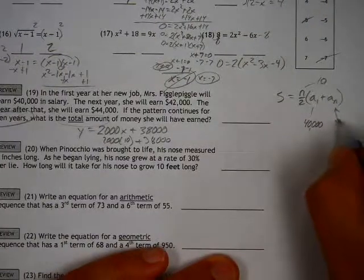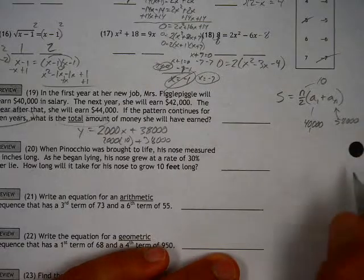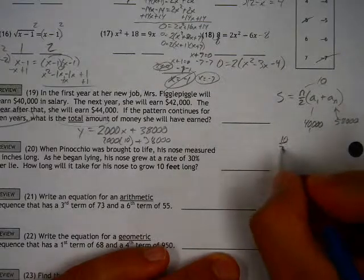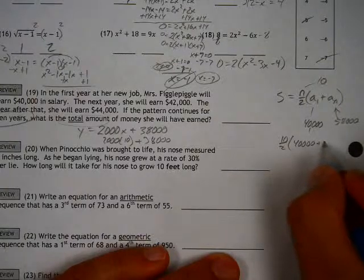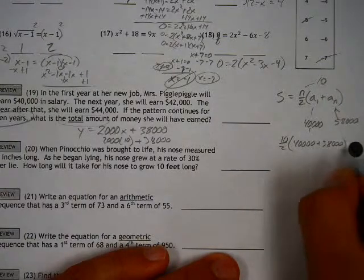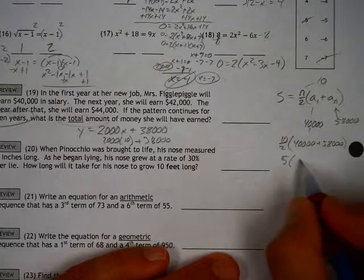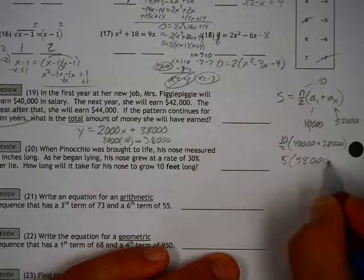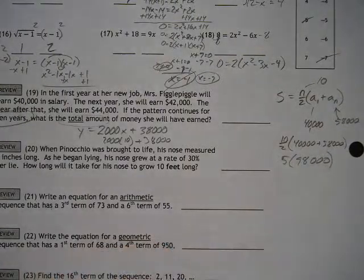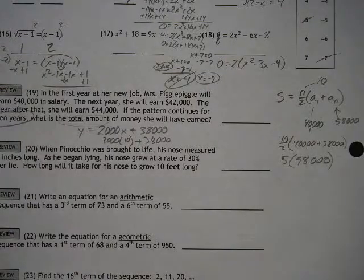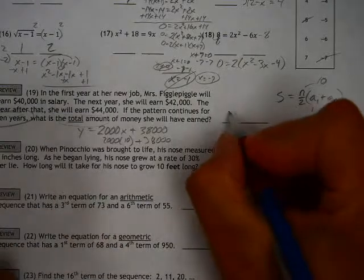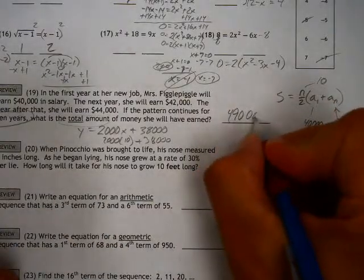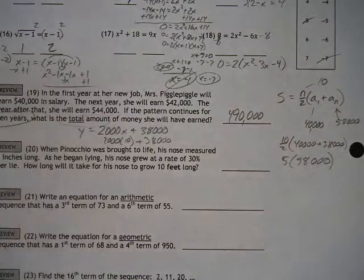That's the number that we're going to put in here, 58,000. So now we have 10 over 2 times 40,000 plus 58,000. So that's 5 times 98,000. So what did she earn over the course of her illustrious career, or 10 years anyway? 98,000 times 5 is equal to 490,000.